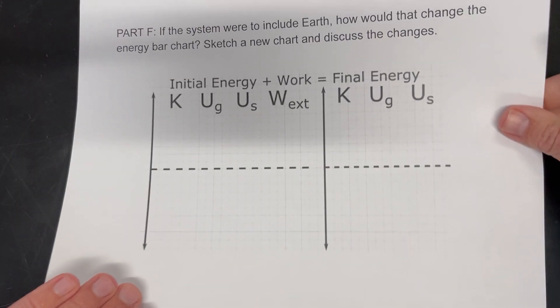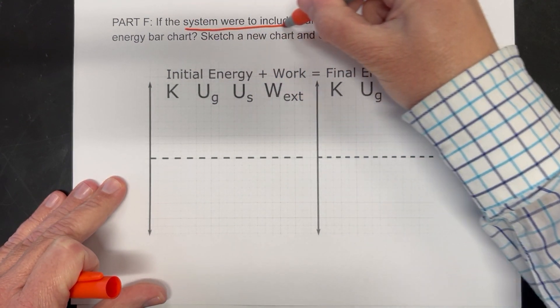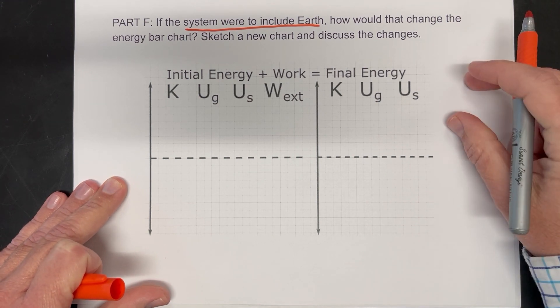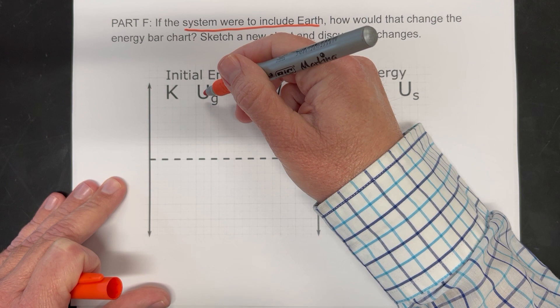Now, we switch things up here a little bit. It says, what if we're going to include earth in the system? How would that change the chart? So now that we've got earth in the system, we can talk about gravitational potential energy.